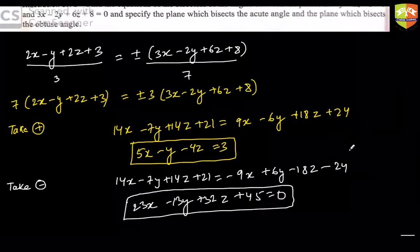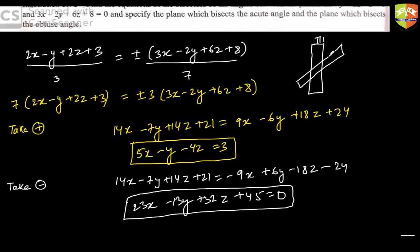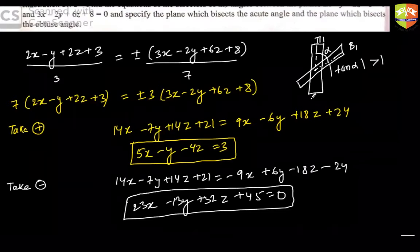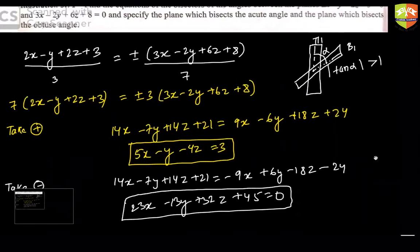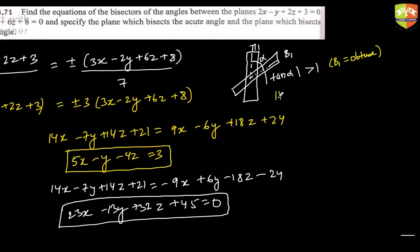Now, how would I know which bisector is the acute angle bisector and which is the obtuse angle bisector? You take one of the bisectors and one of the given planes. Find the tan of the angle between them — you can always find the cos of the angle between two planes, then convert that cos to tan. If |tan α| > 1, that means the bisector you chose was the obtuse angle bisector. If tan α < 1, that means the bisector you chose was the acute angle bisector.